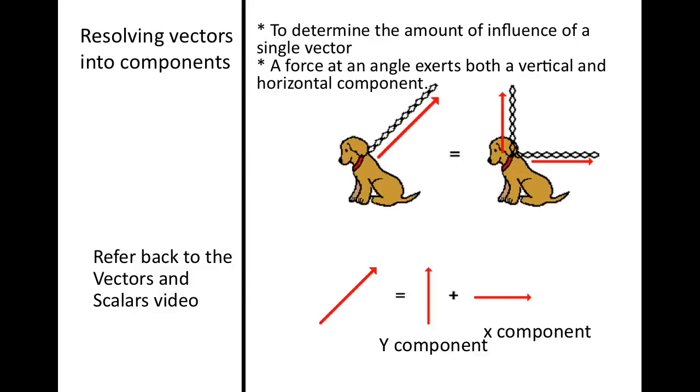So if you don't remember, you can refer back to the vectors and scalars video. But pretty much what it's saying is that with this dog, if I am pulling him with a certain amount of force, we know that the dog is experiencing a vertical force and a horizontal force. And if we take these two forces and find the y component and the x component, we know that that is going to equal the resultant.